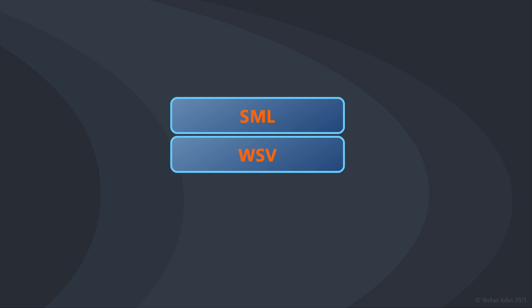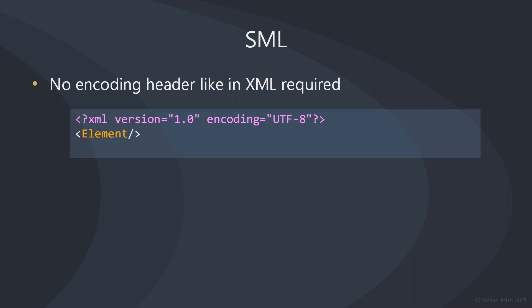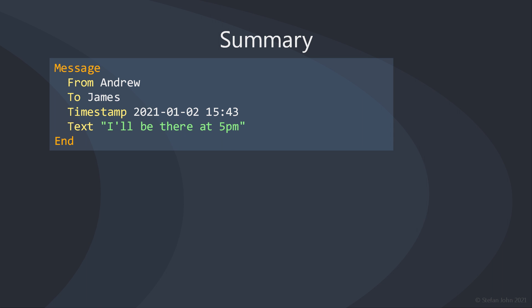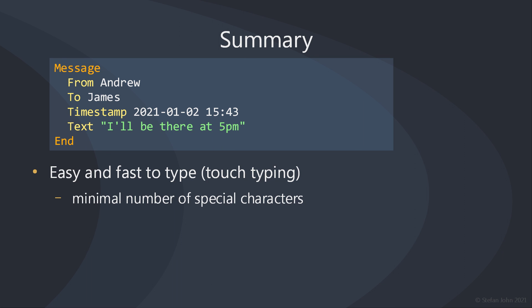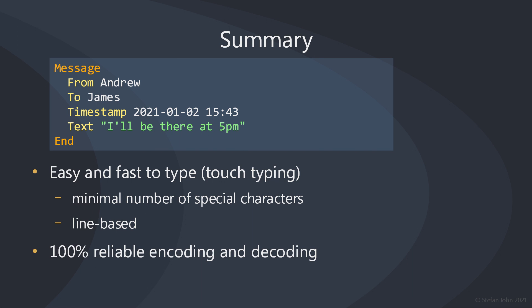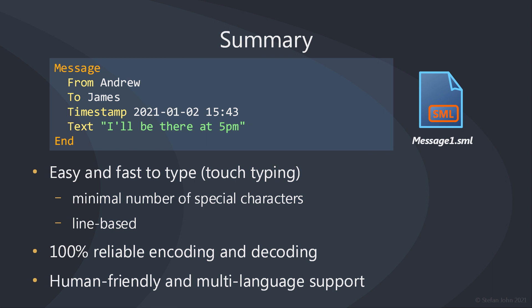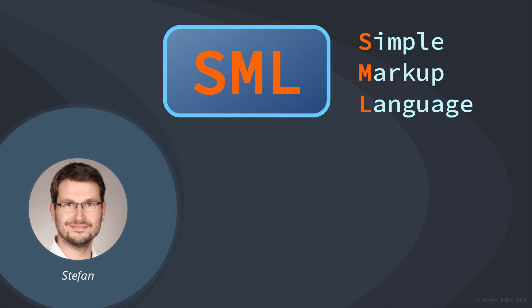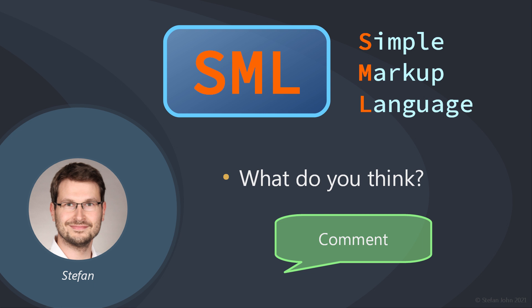So the package of SML, WSV and reliable TXT covers all you need for your own textual documents, and you will never have to write an encoding header. That's SML. So give it a try. Open up your favorite text editor and type in your first SML document. Feel how fast you are and how easy it is to type because of the reduced number of special characters and the natural separation of values by whitespace and line breaks. Choose UTF-8 encoding with BOM, the byte-order mark, and save it as an SML file. Give others the file to read and test how human-friendly it is. Even non-experts will decipher the meaning of your own documents. And if you are not a native English speaker, write an SML document in your mother tongue. Would you use SML in your next project? Tell me what you like about it or don't like and leave a comment down below.